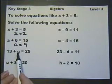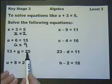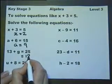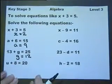13 add something is 25, so let's take that 13 off the 25 and get 12. So the missing value of G is 12.